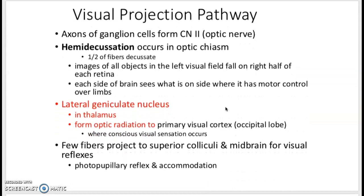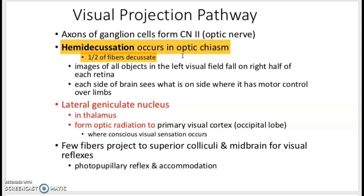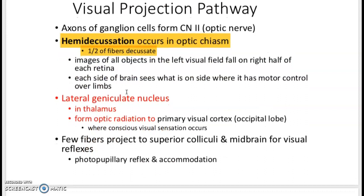This is what we call hemidecussation, and this happens in that optic chiasm, which is right where the information crosses over or decussates. This allows the side of the brain that sees information to also be the same side that has the motor control. A few nerve fibers go to the superior colliculus, the midbrain, for vision, but most of it is going to your occipital lobe.